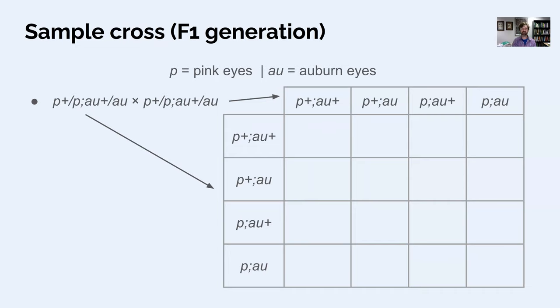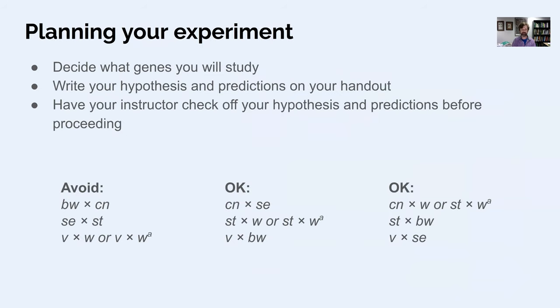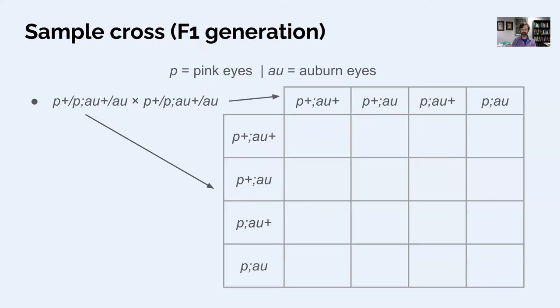So crossing the F1 generation, this would give you your offspring here would be the F2 offspring. So I also haven't filled this one in. Will you be able to calculate out the frequencies that you expect for the offspring from this?